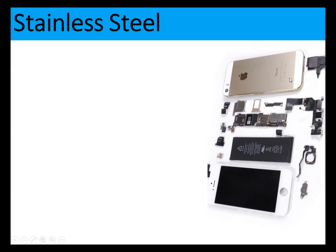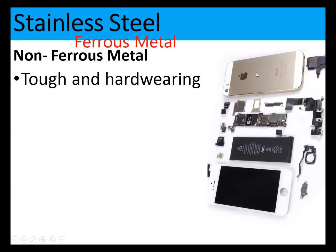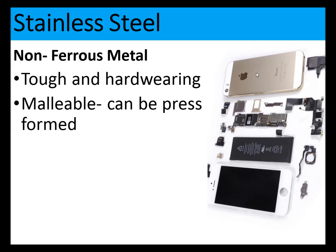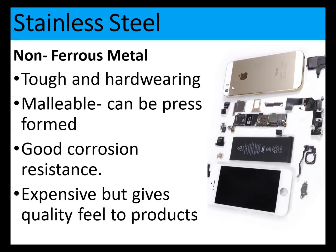Stainless steel is another material used in phone cases. It is a ferrous metal, tough and hard wearing, and malleable so it can be press formed. It has good corrosion resistance and is expensive, but gives a quality feel. High-end products often use stainless steel because it is durable and hard wearing, as seen on the stainless steel back of the iPhone.